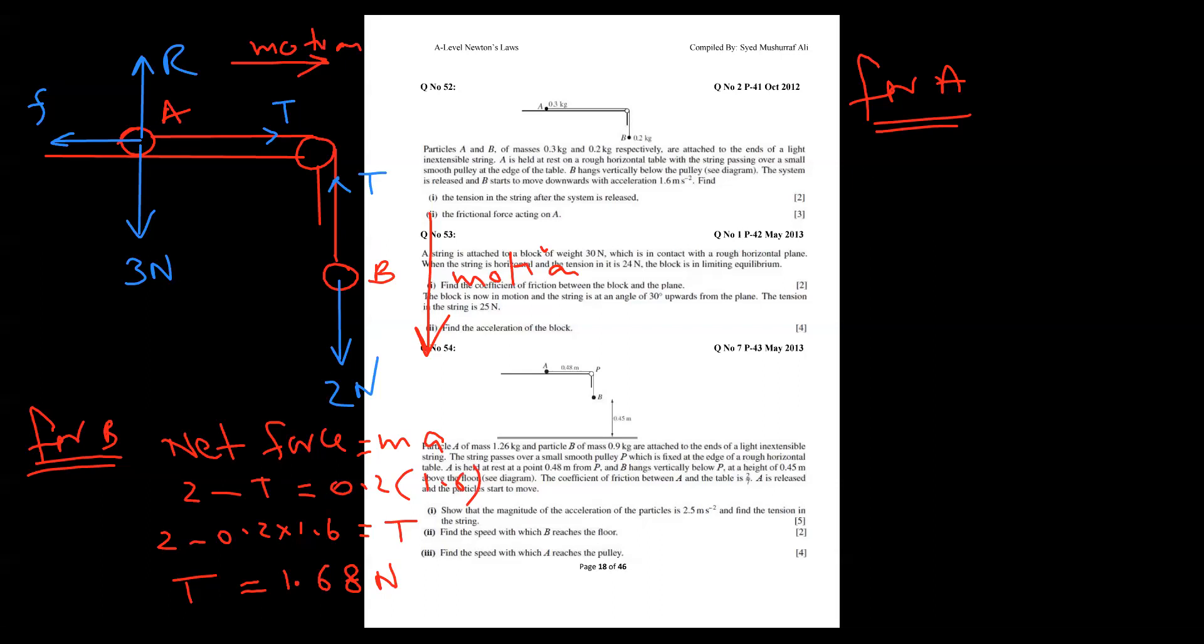So I will start like this: net force equals ma. Because system is right side, tension is bigger, friction is lesser. So T minus friction force equals ma. Tension we got from before, so 1.68, and friction I want to find. Mass of particle A is 0.3, so 0.3, and acceleration of the whole system is 1.6 because they're attached particles. Minus 0.3 times 1.6, and I am getting the friction very easily.